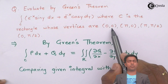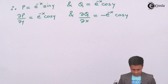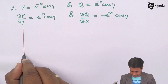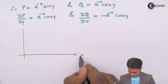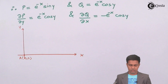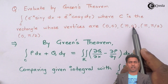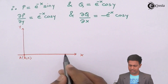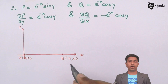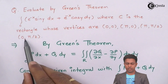The first vertex is (0, 0). Next, (π, 0) lies on the x-axis, so this is point B at (π, 0) since the y-coordinate is 0 on the x-axis. Next vertices are (π, π/2) and (0, π/2). So if this side is π, then the height is π/2.